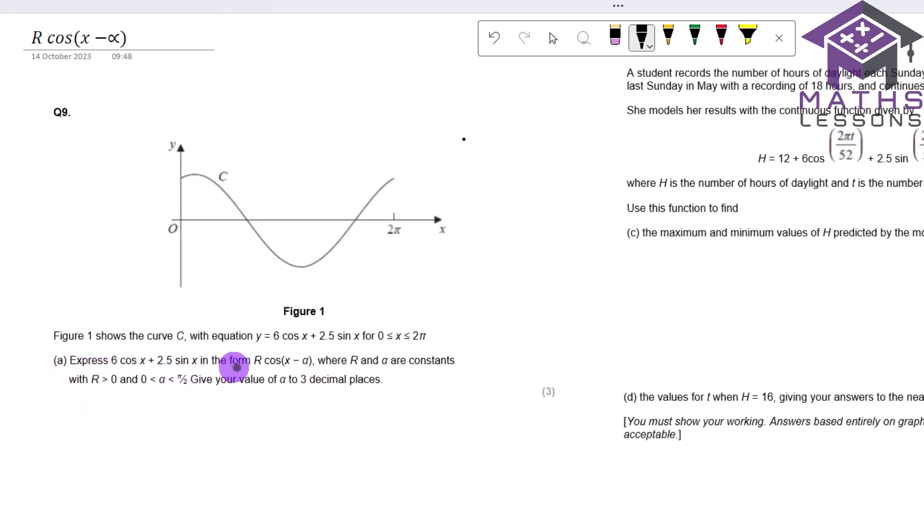And we want to express this in the form r cos x minus alpha, where r and alpha are constants, and r is bigger than 0 and alpha is between 0 and pi over 2. And it's asked us to give alpha to three decimal places.